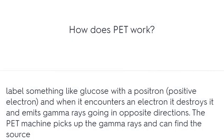How does PET work? You label something like glucose with a positron, and when it encounters an electron it annihilates and emits gamma rays going in opposite directions. The PET machine picks up the gamma rays and can find the source.